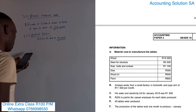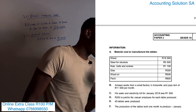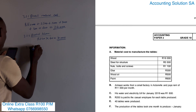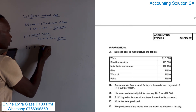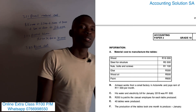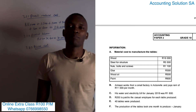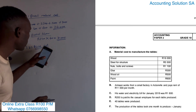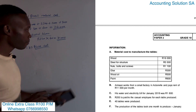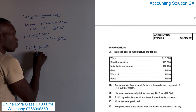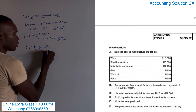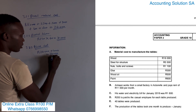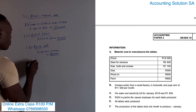That's only two marks for direct labor. For 3.2.3, we are looking for prime cost. The formula for prime cost is: direct material plus direct labor. If you get the previous calculations correct, you'll get this one correct too. So it's R24,000 plus R10,000, which gives us R34,000 prime cost.